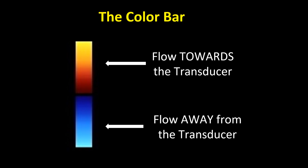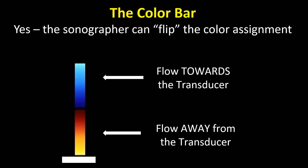Let's direct our attention to the color bar — this is very important. You always have to be aware of that. While there's some nuance among manufacturers, basically most use red and blue. Flow towards the transducer is always on the top, in this case red. Flow away from the transducer is always on the bottom, in this case blue. The sonographer can and often will flip the color assignment — in fact, many times this is done automatically by the instrument upon beam steering. In this case, note flow towards the transducer is blue and flow away is red.